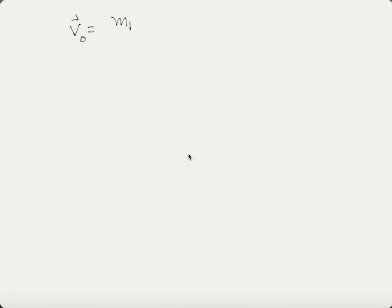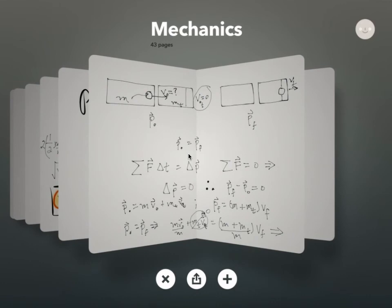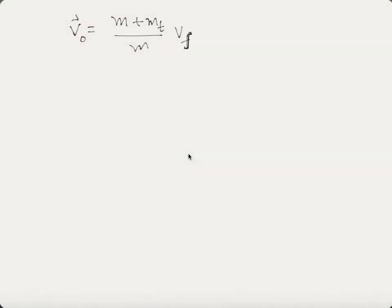So v₀ equals (m_ball + m_tube) / m_ball times the final velocity v_f. That's part of our theory. The only thing we need now is the final velocity. We'll calculate it by considering when the ball strikes the tube — the tube starts to move with that final velocity and then rises a certain height.